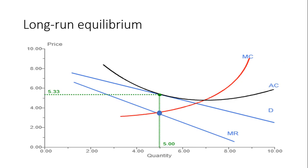In long-run equilibrium, the firm will again be producing where marginal cost equals marginal revenue. In this case, the firm is producing five units of output and will charge a price of $5.33, found by plugging five units into the demand curve. In long-run equilibrium, price equals average cost and firms make a normal profit — the average cost curve is tangent at this five units of output.